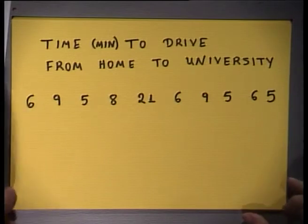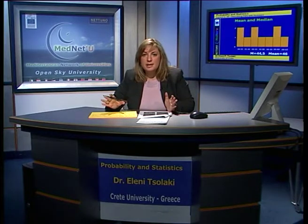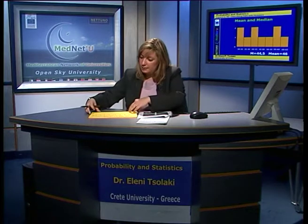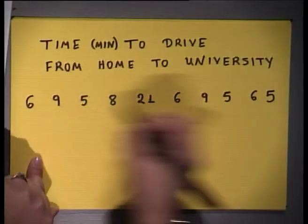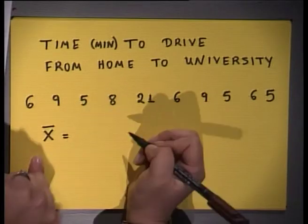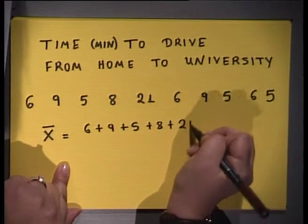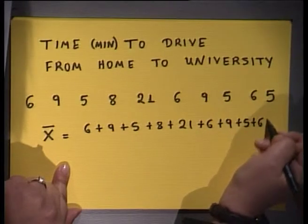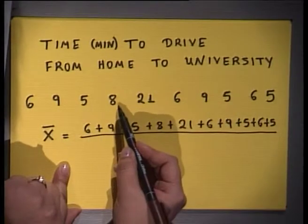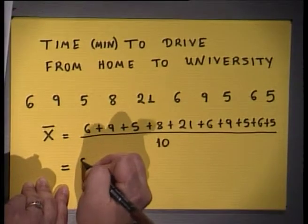The first thing to do is to calculate the mean. We do not need to order the data for this step. The sample mean, denoted by x-bar, is calculated by adding up all the numbers and dividing by the number of data points. In this case we have 10 data, and we find that the mean is 8.